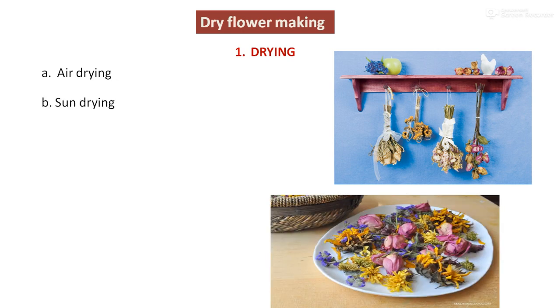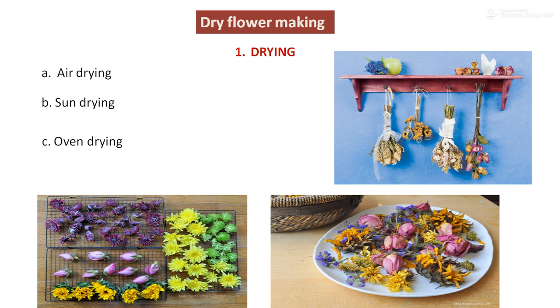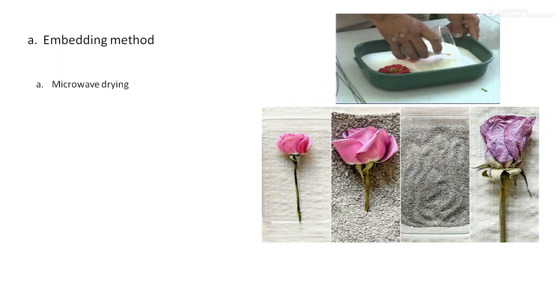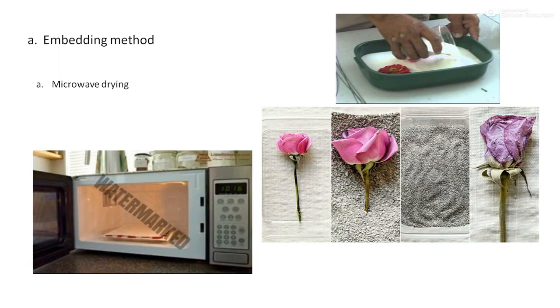Sun drying uses solar heat to dry plant material. Oven drying uses a microwave to dry the flowers. In the embedding method, silica gel or sand-like material absorbs moisture content from the flower, allowing us to retain the color and form of the fresh flower in dried condition — making them attractive pieces for arrangement.